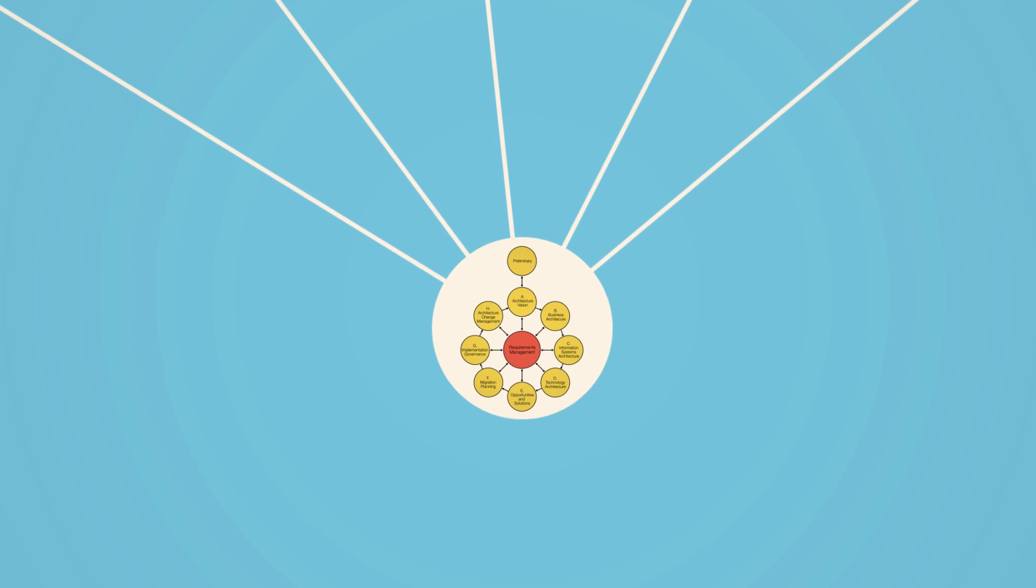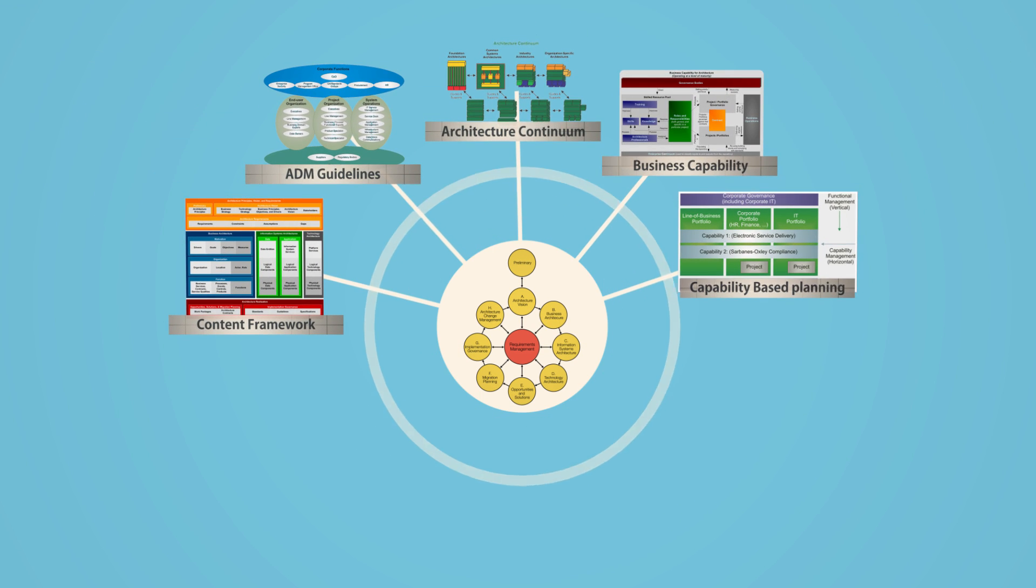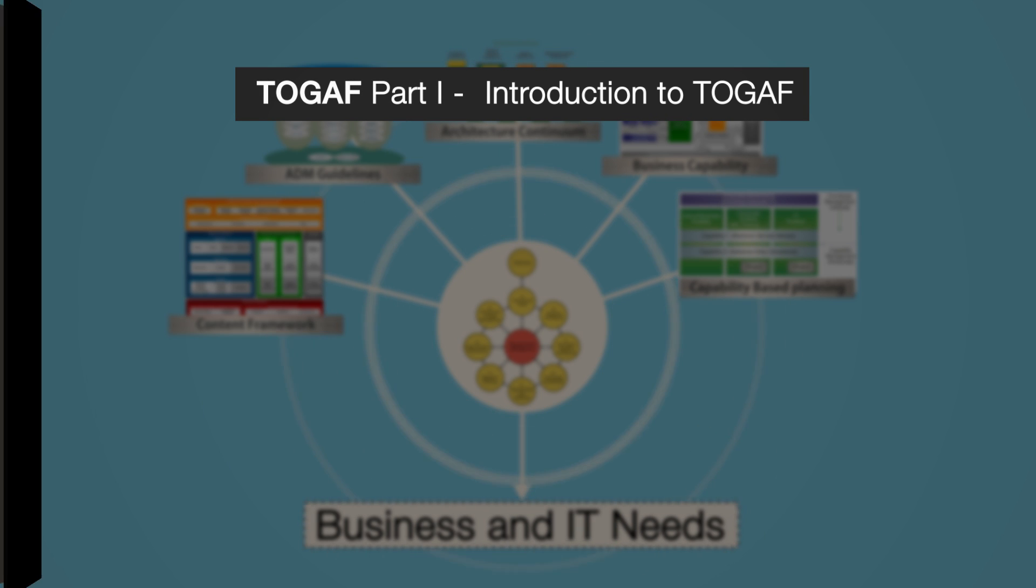The ADM is the process that pulls together the elements of TOGAF, as well as any other architectural assets, to meet the business and IT needs of an organization. You can get a good overview of everything in TOGAF in Part 1, which is the introduction to TOGAF.